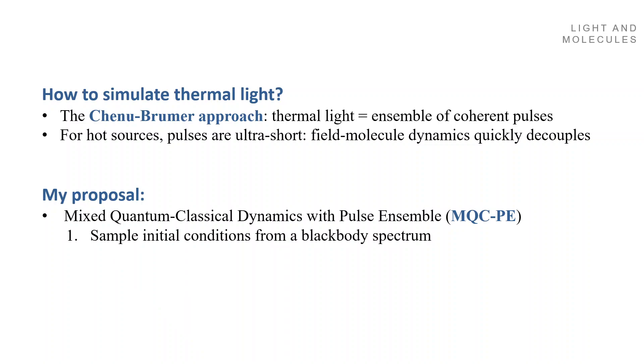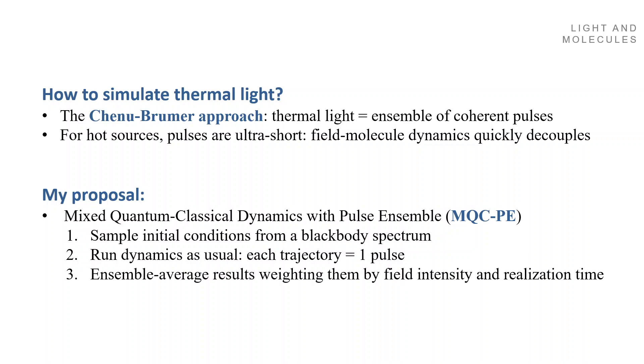And the idea of the method is: one, sample initial conditions from a black-body spectrum. Then, run dynamics as usual. Each trajectory is one pulse. And finally, make an average of an ensemble weighting each trajectory by the field intensity and the realization time. I'm going to discuss later each one of these topics.